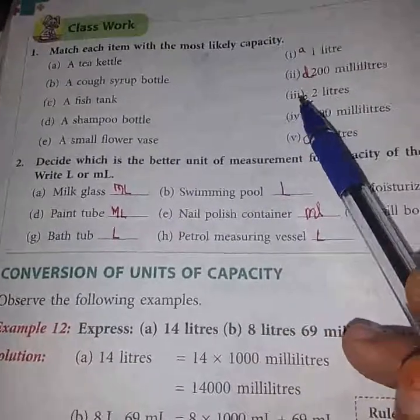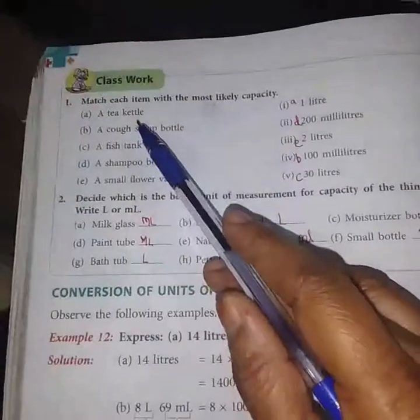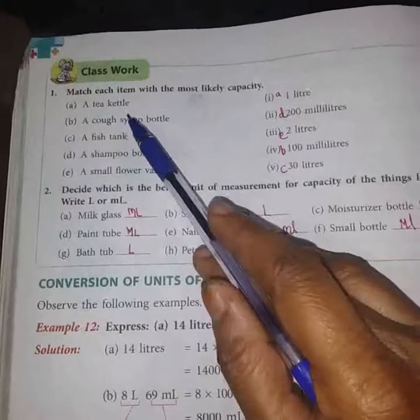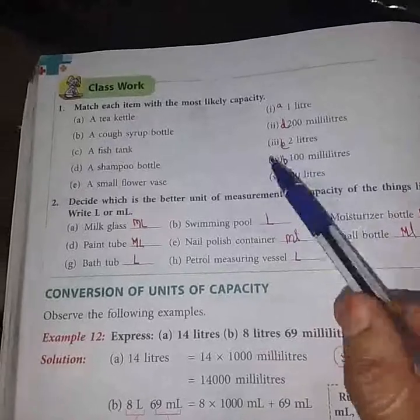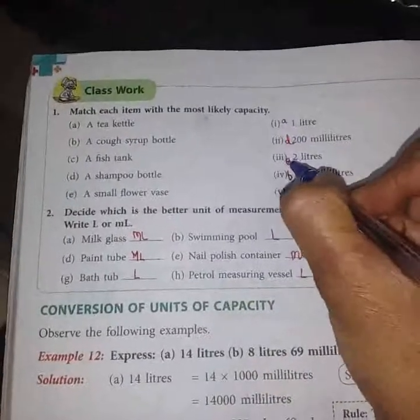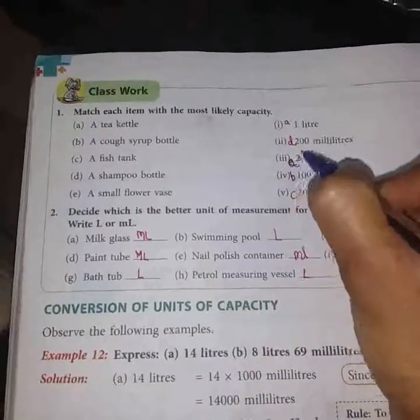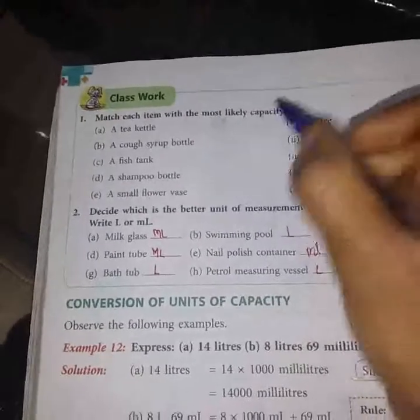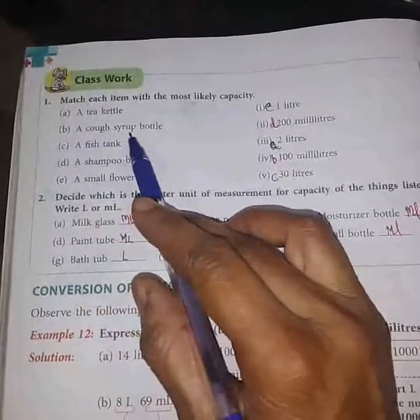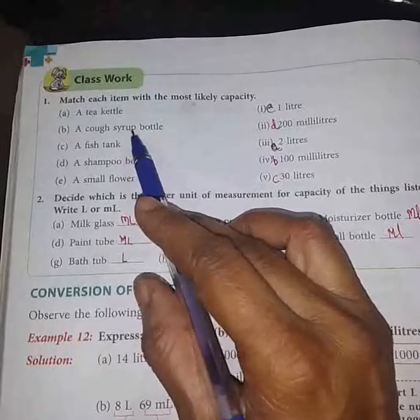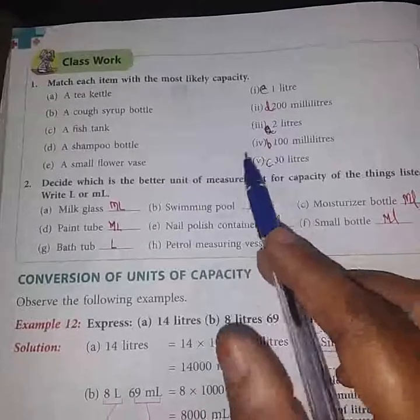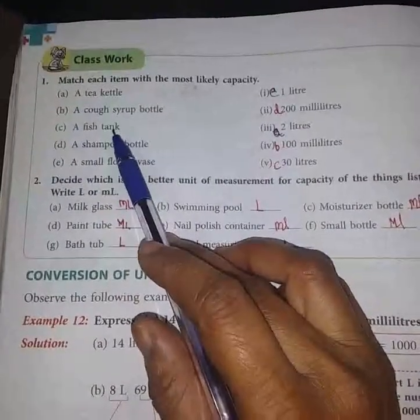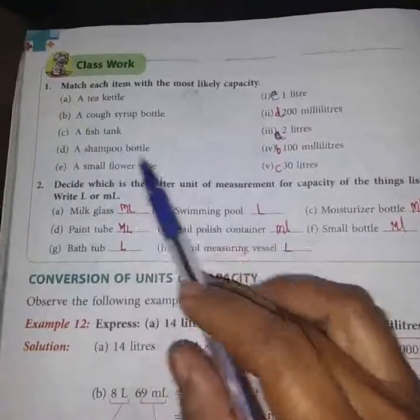So the first thing is a tea kettle. Tea kettle must be of 1 liter or we may say 2 liters, so we can match it with 2 liters. Then a cough syrup bottle, it must be a small bottle so it is of 100 milliliters. A fish tank, it is too big so we have 30 liters of capacity.